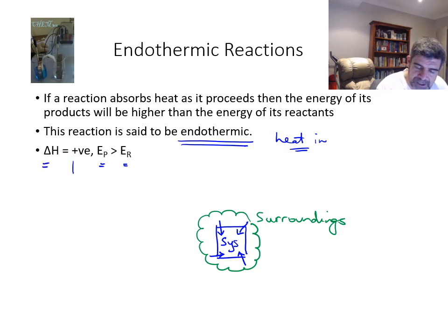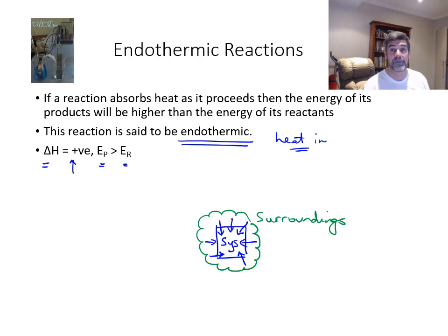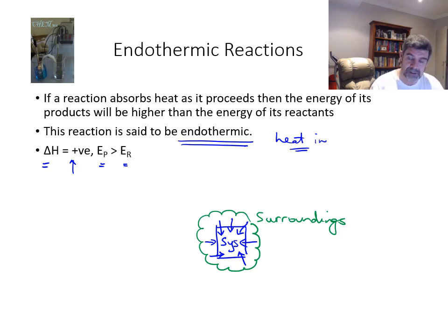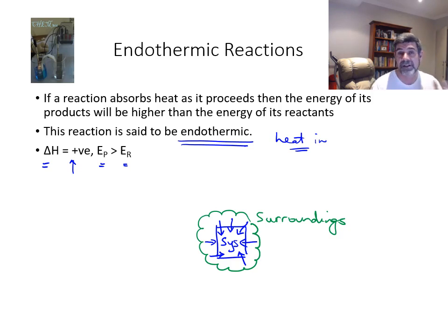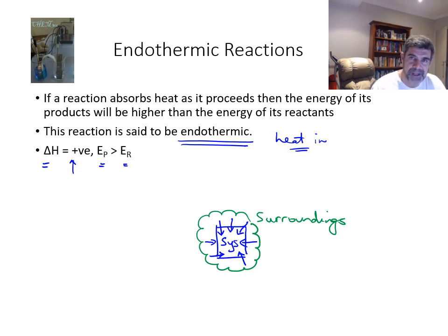The enthalpy change is actually a positive value — there's extra energy. Where did this energy come from? It came from the surroundings. In fact, if you touch the container, it will feel cold because that energy is being transferred from you into the system. This is exactly the reverse when we're looking at exothermic reactions, where we can measure a temperature increase in the surroundings, because energy is being released from the system into the surroundings. Using this system-surroundings model is going to be quite useful as we progress through the rest of the concepts in this first topic. Thank you for watching.